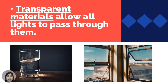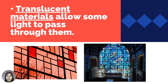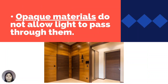Different materials have different ways of transmitting light. Transparent materials allow all light to pass through them — clear plastic and glass windows are examples of transparent objects. Translucent materials allow some light to pass through them — stained glasses and frosted windows are examples of translucent objects. Opaque materials do not allow light to pass through them — concrete walls, wooden doors, and mirrors are examples of opaque objects.